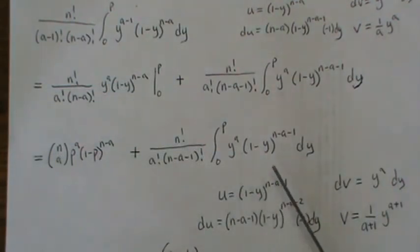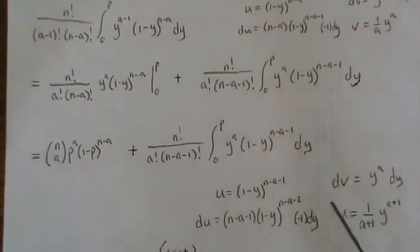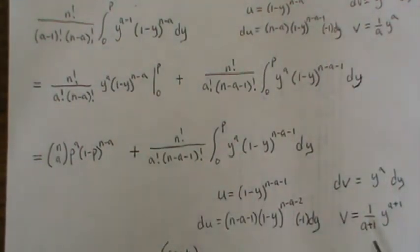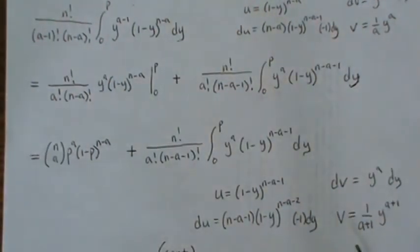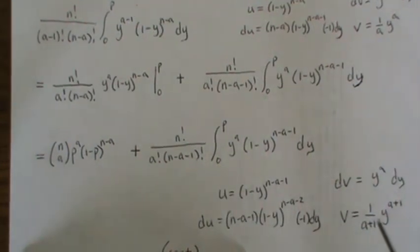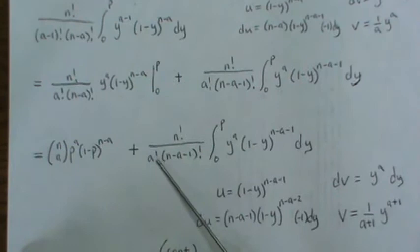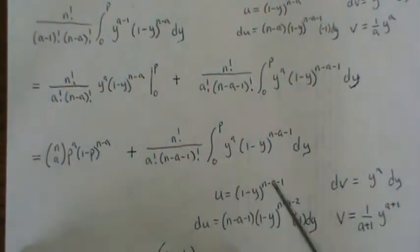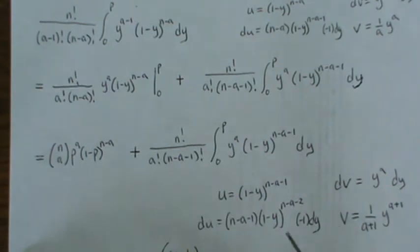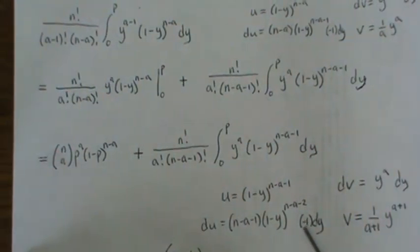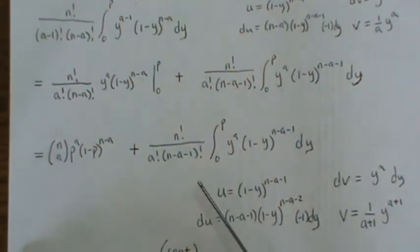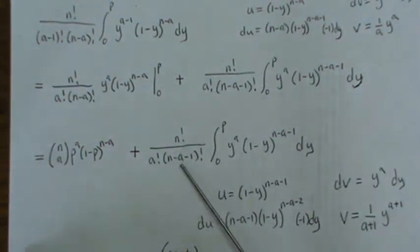Here we let U be this piece and DV be that piece. When we differentiate we get this, and when we take the antiderivative we get this. So the next piece is this divided by A plus one. Remember when we have a constant out front, that is going to add to one of these, so it ends up being A plus one factorial when we combine those. Then it's minus V DU, and that minus and the other minus change it to a positive. But this N minus A minus one is going to take away one of those numbers to make it N minus A minus two.